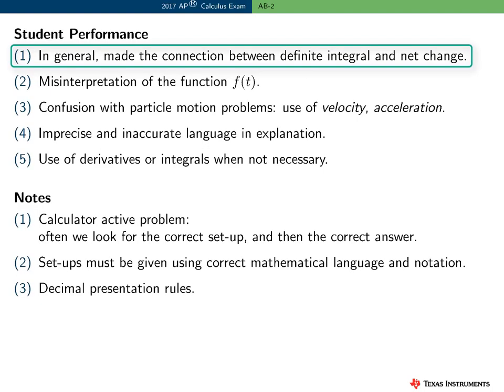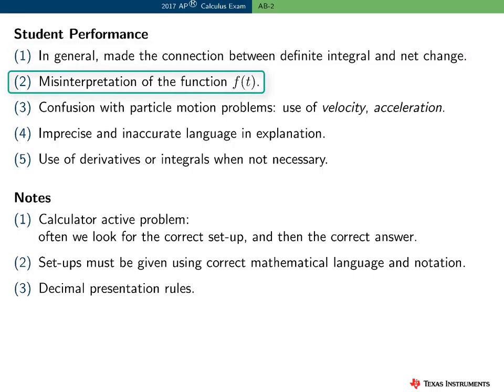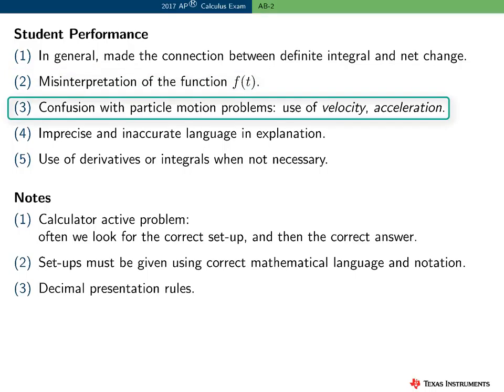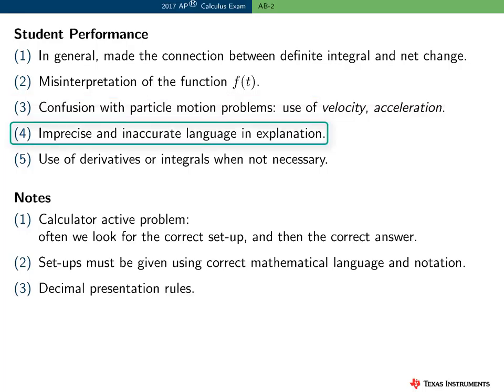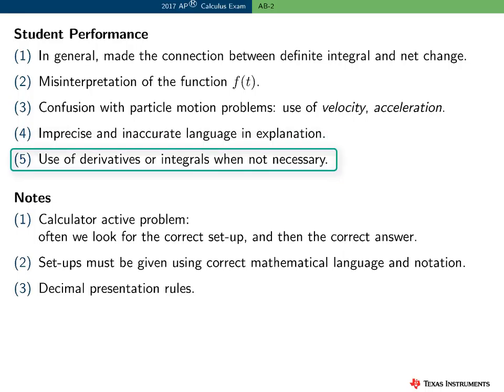Here are some brief comments about student performance on this question. In general, students made the connection between the definite integral and net change. Most seem to understand the concept of using the definite integral as an accumulation function. However, some students misinterpreted the function F — this is a rate function in this problem. Strangely, some students confused this problem with particle motion problems and actually included the terms velocity and acceleration in their answers. Some students used imprecise or inaccurate language in their explanations, which seems to be a common error in contextual problems. And some students used derivatives and definite integrals when they weren't necessary, perhaps related to a misinterpretation of the rate functions.